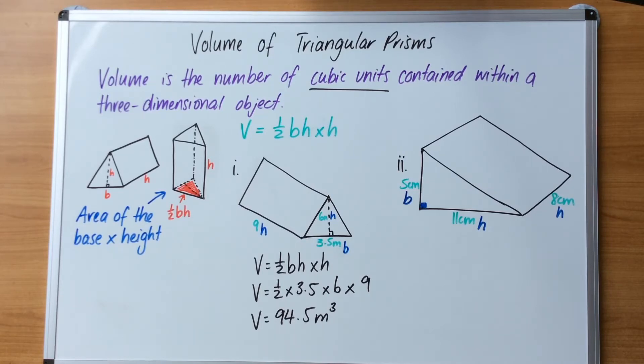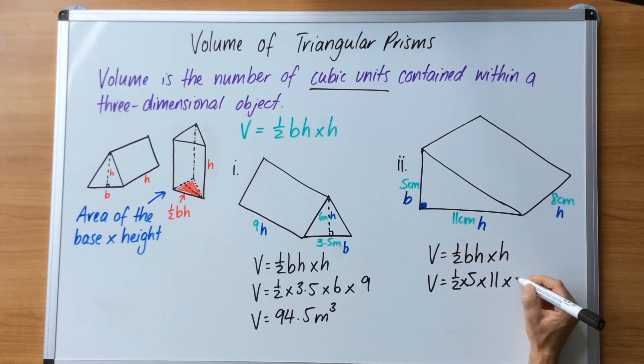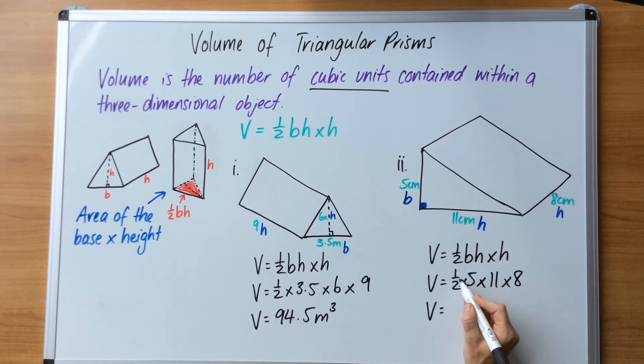We're going to write the rule: volume equals half base height times height. Now substituting in the values: half times 5 (the base) times 11 (the height) and times 8 for the height of the prism. Punch that into your calculator using the fraction button: 2 times 5 times 11 times 8 equals, and you will get 220 cubic centimeters.